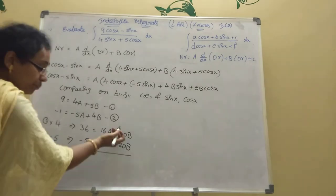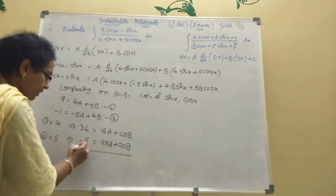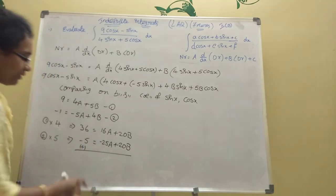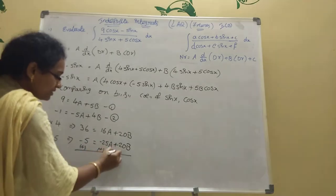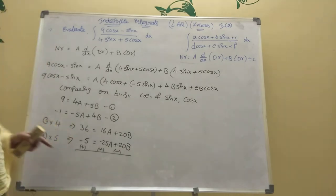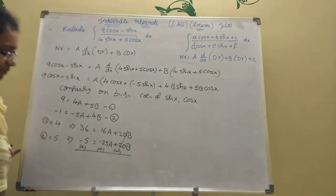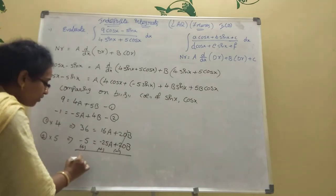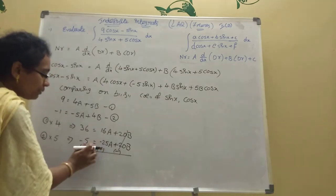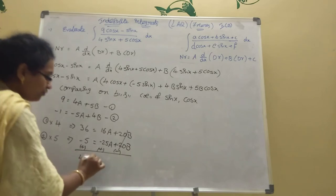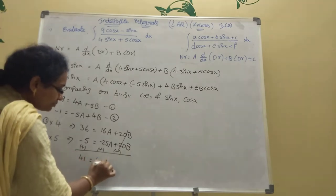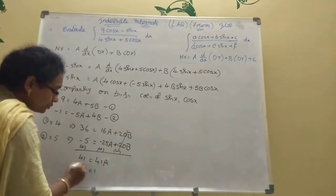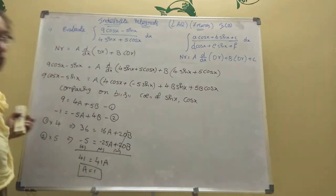Since both terms have plus 20B, we subtract to eliminate B. Changing signs on the second equation: 36 plus 5 equals 41, and 16A plus 25A equals 41A. So 41 equals 41A, giving us A equals 1.